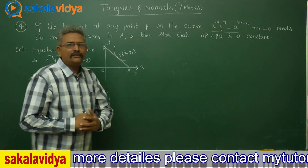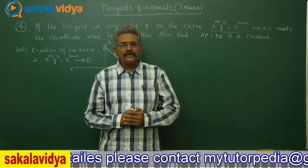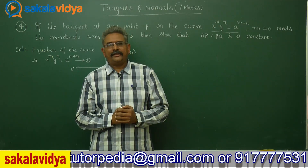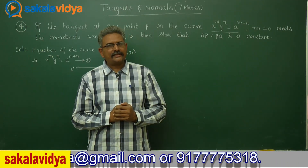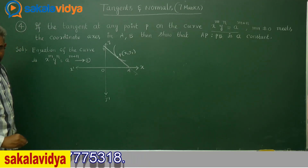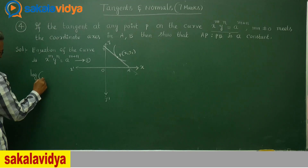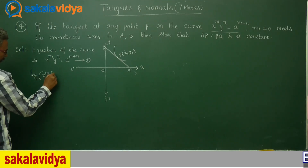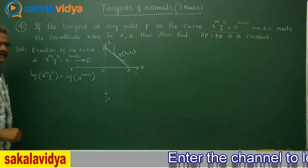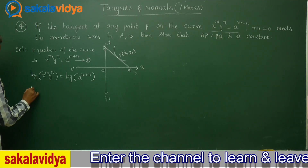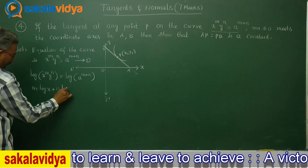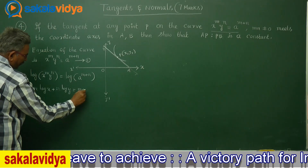We need to differentiate this function with respect to x. Doing it directly would be lengthy, so it is better to take logarithms on both sides. Applying logarithms: log(x^m · y^n) = log(a^(m+n)), which gives m·log(x) + n·log(y) = (m+n)·log(a). Note that (m+n)·log(a) is a constant.